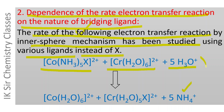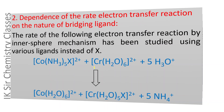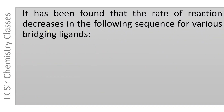In these experiments, different halide ions are taken as X: F⁻, Cl⁻, Br⁻, and I⁻. It has been found that the rate of reaction decreases in the following sequence for various bridging ligands: the rate is highest when X⁻ is I⁻, and lowest when X⁻ is F⁻. The rate of reaction thus decreases on moving from I⁻ to F⁻.